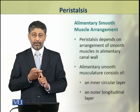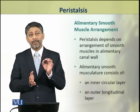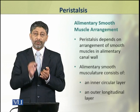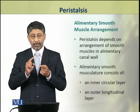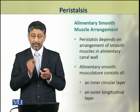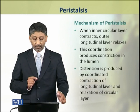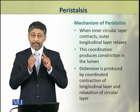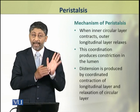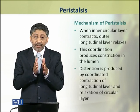Dear students, peristalsis depends on the arrangement of smooth muscles in the alimentary canal wall. The alimentary smooth musculature consists of an inner circular layer of smooth muscles and an outer longitudinal layer of smooth muscles. When the inner circular layer contracts, the outer longitudinal layer relaxes. This coordination produces constriction in the lumen.